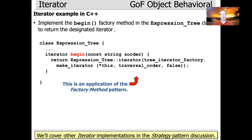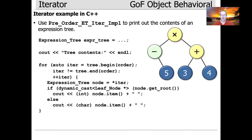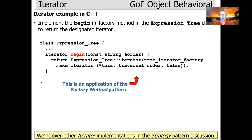Now that I've briefly shown how you can implement an iterator, let's talk about how we get iterators. The way that works is there's a factory method — using the factory method pattern — on expression tree called begin. What this begin method does is under the hood it calls an internal implementation that's an iterator factory, which will make us the appropriate type of iterator. We'll look at how to do this when we get to our next discussion of the strategy pattern.